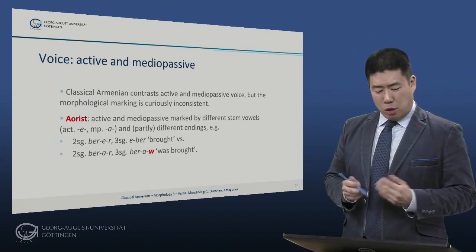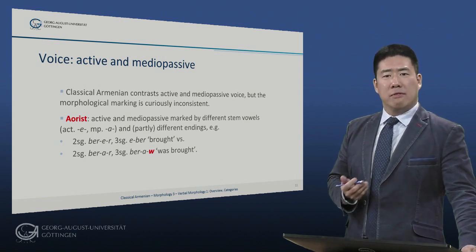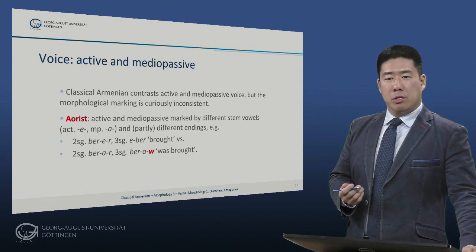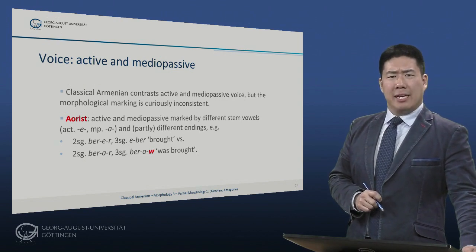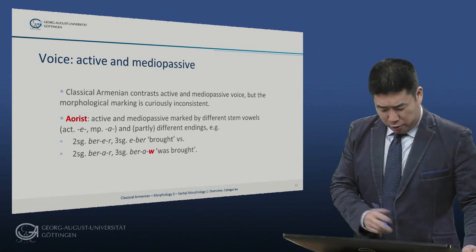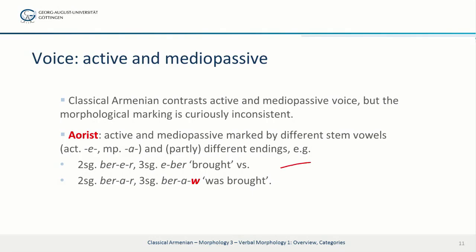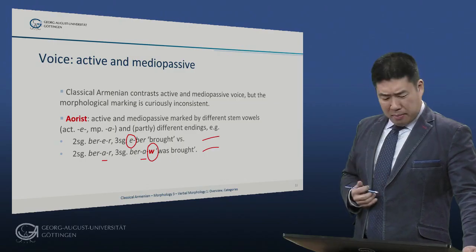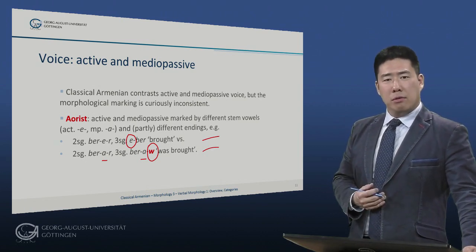Let's now turn to the expression of voice. Classical Armenian contrasts active and medio-passive voice as many other older Indo-European languages or modern Greek, but the morphological marking is curiously inconsistent. In the aorist, active and medio-passive are marked by different stem vowels and partly different endings. For example, aorist indicative active second singular berer (you brought), third singular eber — with the augment e. But aorist indicative medio-passive second singular berear with stem vowel a (you were brought), and third singular berear with the same stem vowel a and a special ending -w (he/she/it was brought).